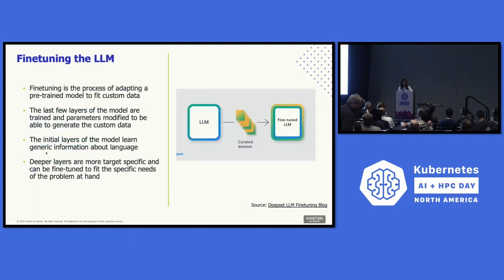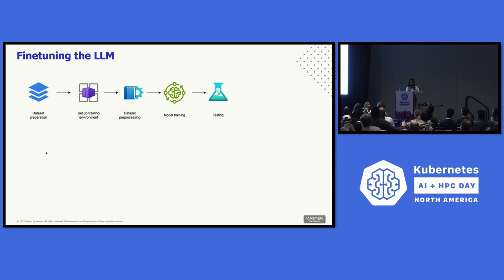Fine-tuning is basically the process of adapting a pre-trained model to fit custom data. What happens is the last few layers of the model are modified to be able to generate just the custom data we want. This is much better than training a model from scratch because it takes much less time and data, since the pre-trained model already has a lot of knowledge about language and the domain at large.